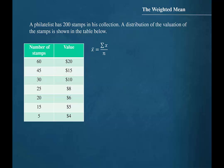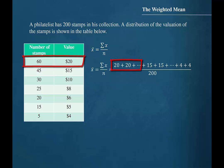In order to calculate the mean value for each stamp, we would need to add the value of each stamp and then divide by the number of stamps in the collection. So we would add 20, 60 times, and then 15, 45 times, and continue in this manner until we have added the value of each stamp down to the 5 stamps valued at $4 each.